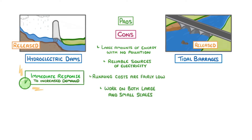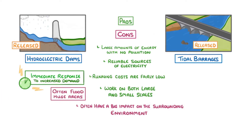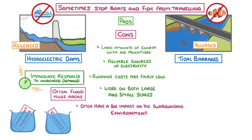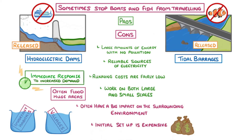Their main downside is that they often have a big impact on the surrounding environment. Hydroelectric dams in particular often flood huge areas because of their size, and this can end up submerging important habitats, and sometimes even whole villages. Both structures also sometimes stop boats and fish from travelling up or down the river, which can negatively affect fish migrations. Finally, the initial setup of both methods is often expensive.